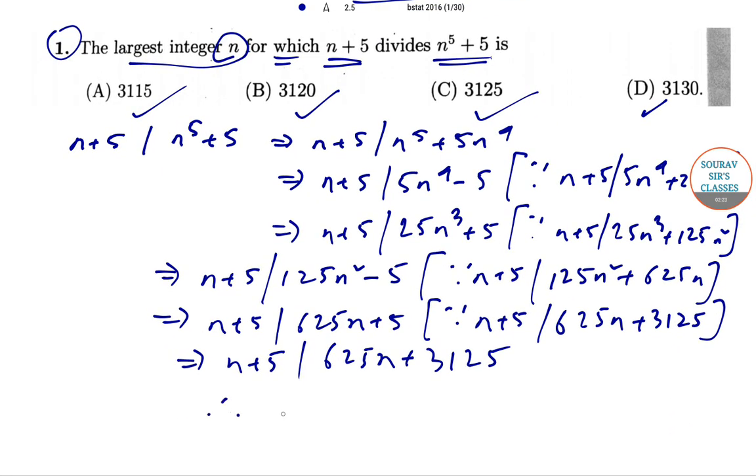Therefore n+5 equals 3120, which gives us n equals 3115. This is the largest integer, and the correct answer is option A.